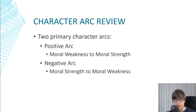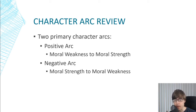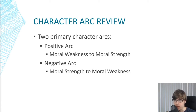A character arc can generally be two different types. One is the positive arc, where a character goes from moral weakness to moral strength. They have some flaw — something that is negatively impacting their relationships — and by the end of the story, they have to learn their lesson and overcome that. A negative arc is more like a corruption arc, where a character starts as either flawless or just neutral, and then they end up becoming corrupted or tempted in some way, developing an immoral worldview that negatively impacts their relationships.